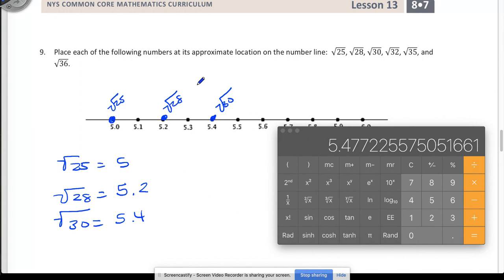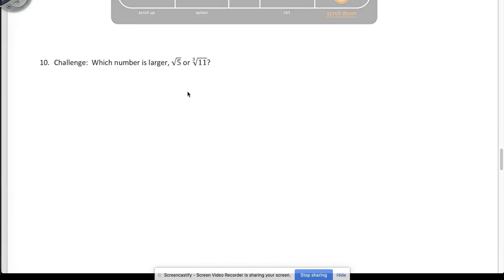And then number 10 says challenge, but you're still going to do it. Don't think that it means bonus. They just want to see if you can determine which is larger. Now, this one, you might need to write down more numbers after the decimal from the calculator. There's your hint. Don't write down just the first two and you'll see why. So this concludes this video tutorial.